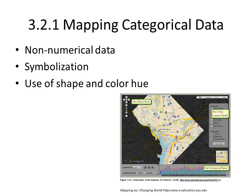When we look at mapping categorical data, we're talking about how we map non-numerical data. One of the important factors related to this is how we symbolize that non-numerical data and how we use the shape and color hue of various symbolization methods in a map.